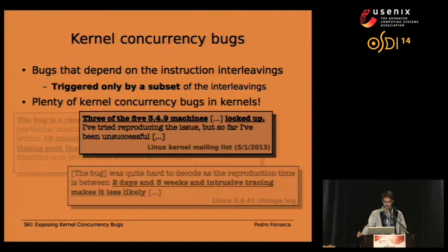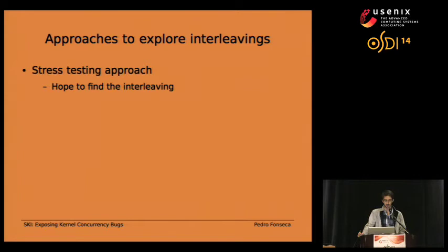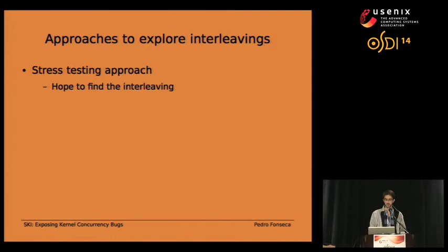So what do developers do in practice to diagnose and reproduce concurrency bugs? They typically rely on stress testing. Developers build test cases that provide a certain input to the kernel they want to test, then repeat this input multiple times, hoping that on each iteration a different interleaving is chosen, and that eventually the interleaving that triggers the concurrency bug is executed and the bug is exposed. Unfortunately, there is no real control over the interleavings explored with this approach.